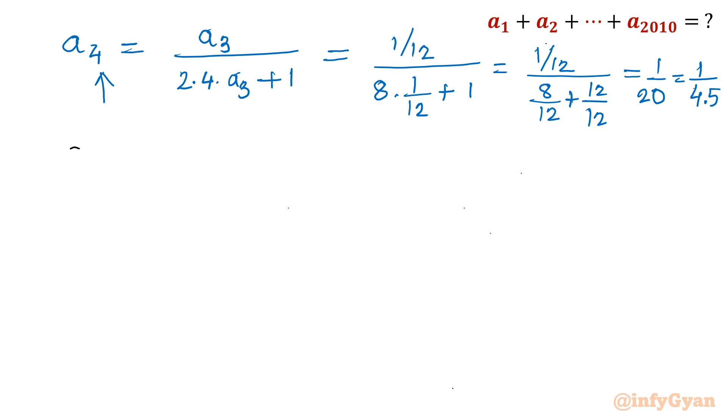Now let us calculate a2010. So it will be a2009 divided by 2 times 2010 times a2009 plus 1. And if you will see the pattern, it is the number written over there and the next number. So I will write straight away this value will be 1/(2010×2011). As it is written here 2010, so same number and the next successive number, so that is 2011.